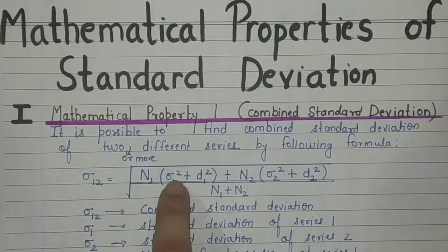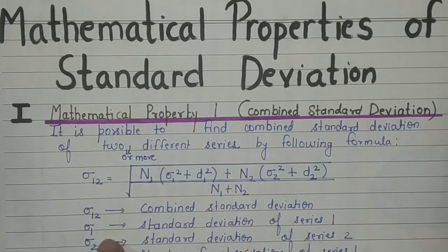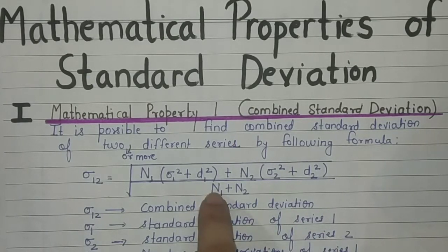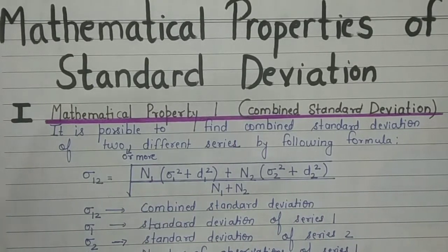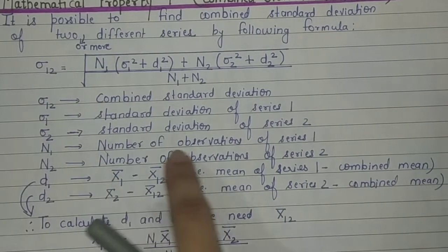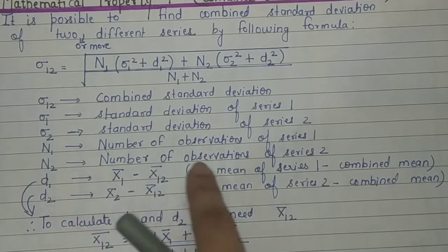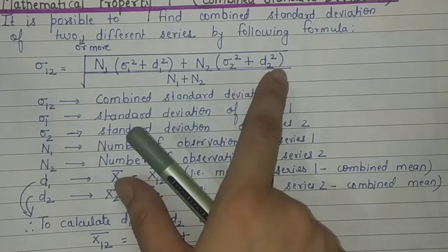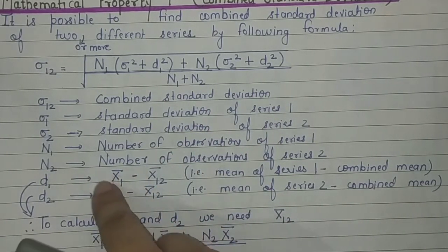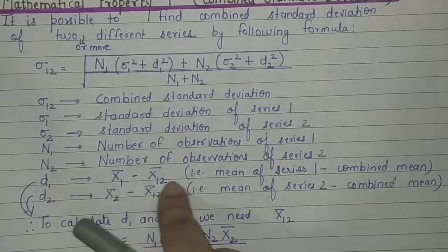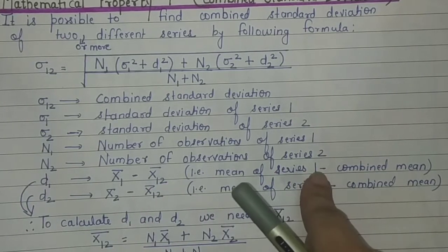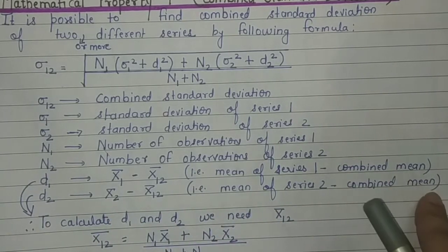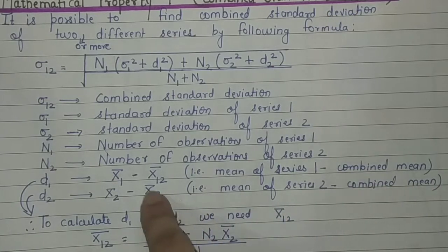Here, σ₁ squared is the standard deviation of series 1, σ₂ squared is the standard deviation of series 2. n1 is the number of observations in series 1, and n2 is the number of observations in series 2. d1 is the difference between the mean of series 1 and the combined mean, i.e., x̄₁ minus x̄₁₂. Similarly, d2 is x̄₂ minus x̄₁₂, the combined mean of both series.